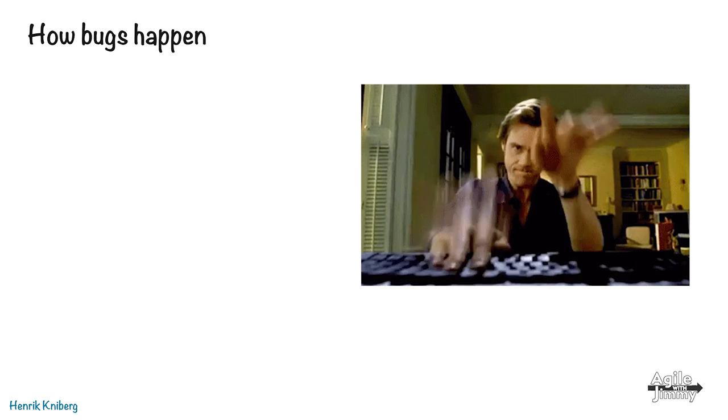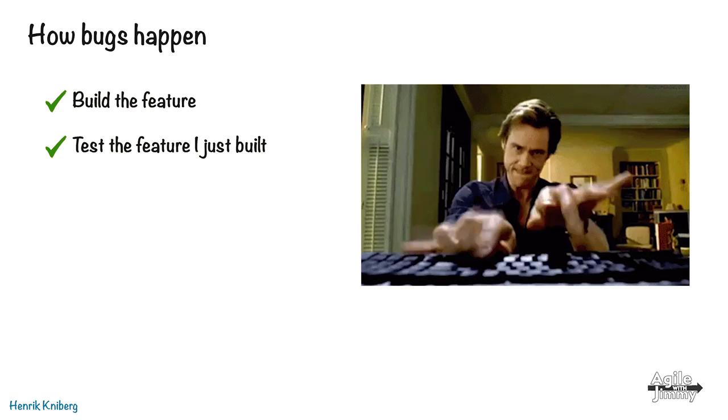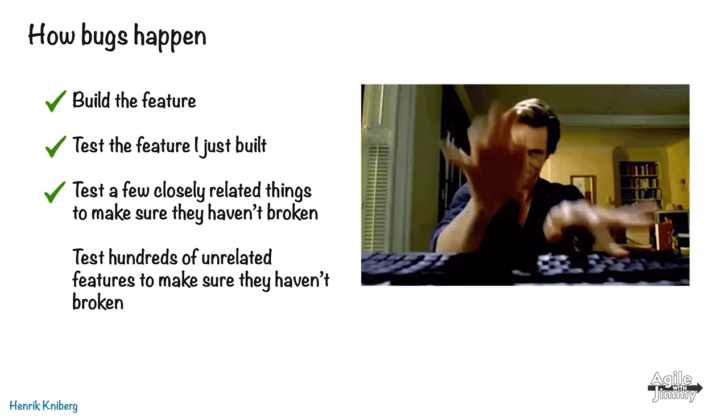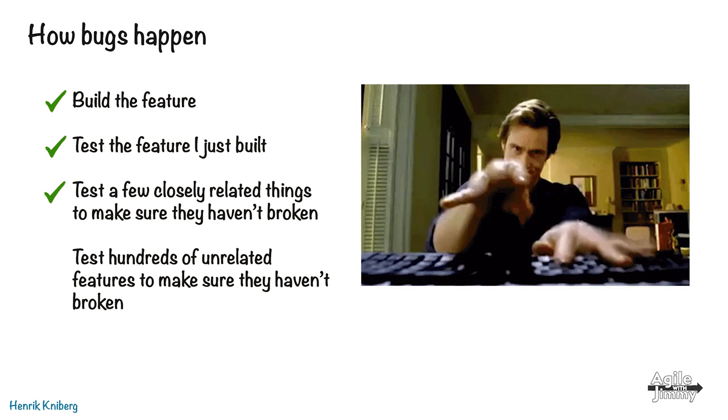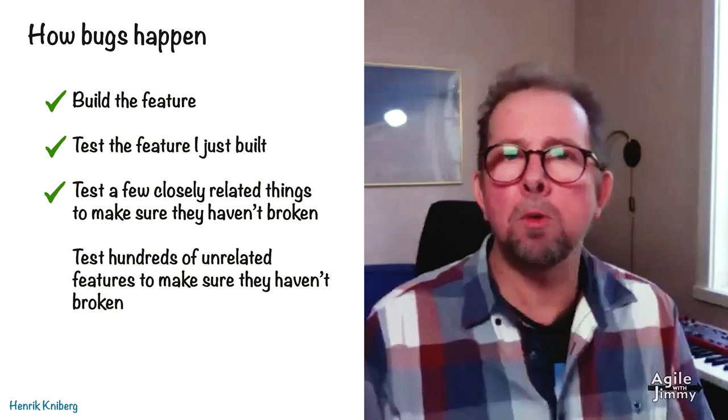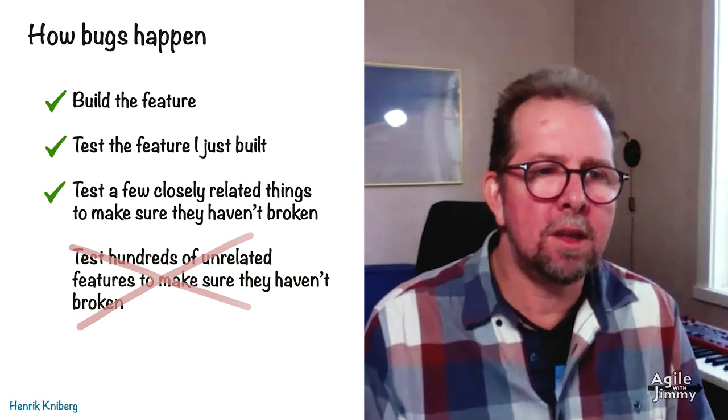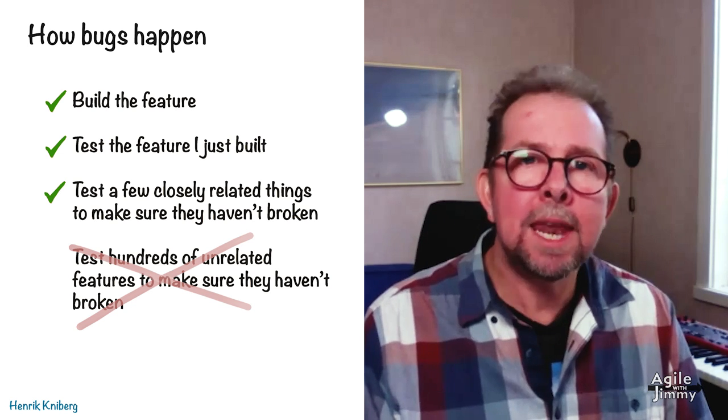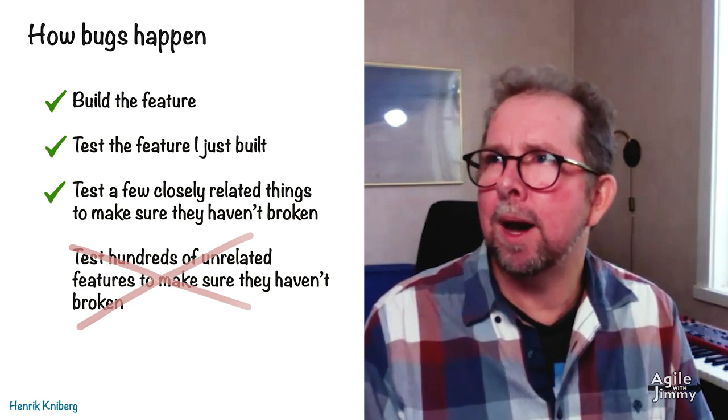But how does it happen from a developer perspective? This is me coding along. I built my feature. I test the feature I just built, obviously. And unless I'm in a terrible hurry, I would also test a few related things that I might have broken, the obvious things. Let's say I fiddled with mine carts, I might test mine cart related things. However, this last step - test like hundreds or thousands of completely unrelated things just in case I happened to break something completely unexpected - obviously I'm not going to do that manually. It's just unrealistic. But this is where the bugs happen. Almost inevitably, when we fix one bug, we create another bug, and we had no idea that that would happen. So yeah, that's what I mean by some bugs being just unavoidable.